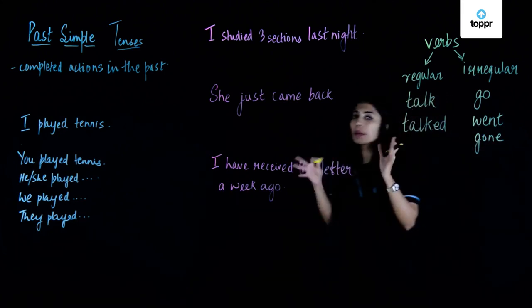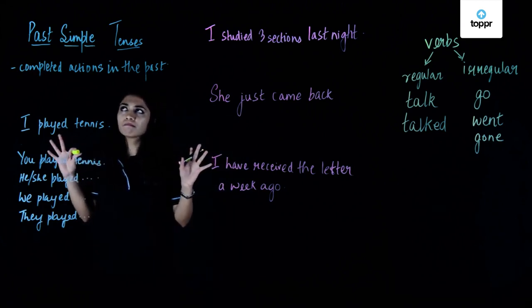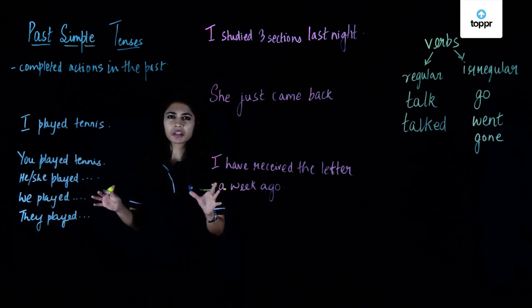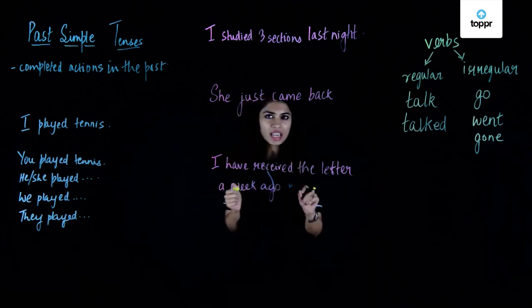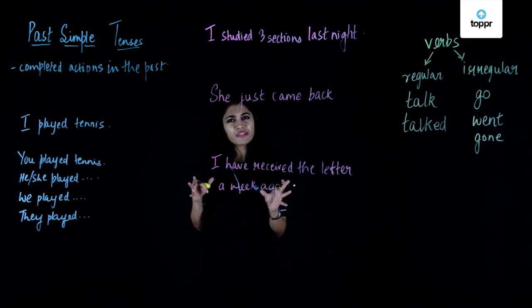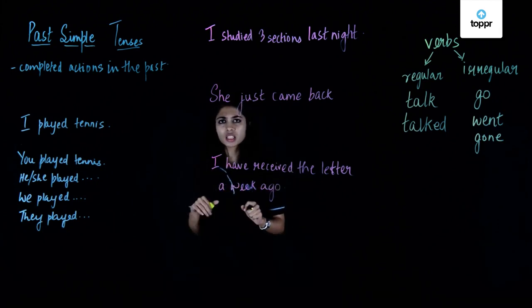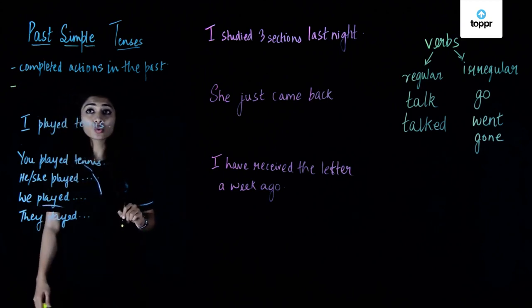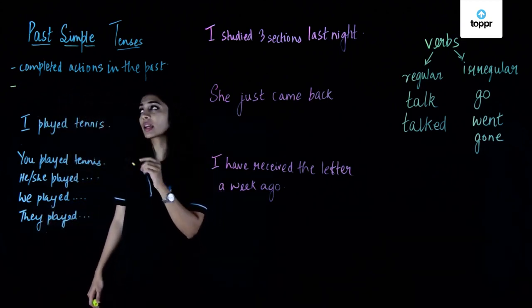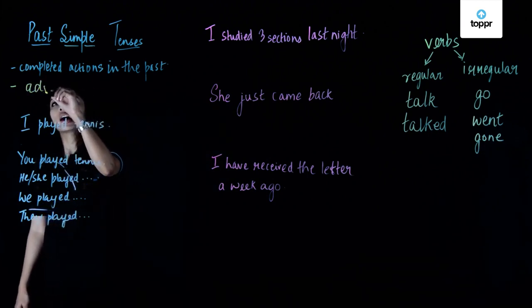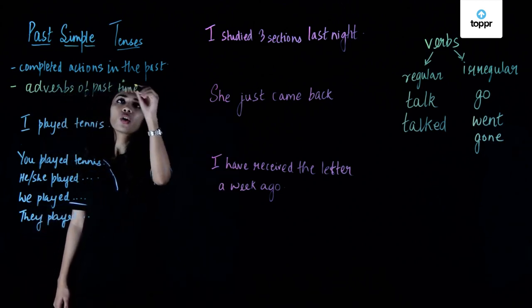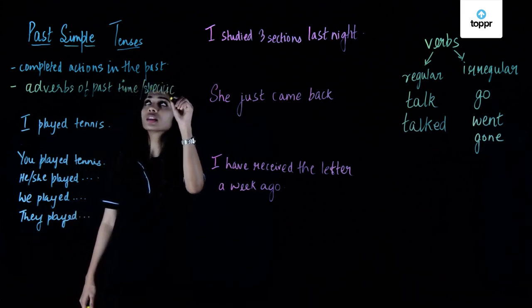Now let's look at the past simple tense. When do we use it? We use it when we talk about completed actions in the past. The difference from the present perfect tense is that in the past simple tense, we use adverbs of past time — a specific, definite time is mentioned in the sentence.